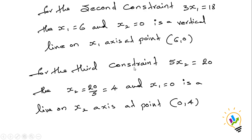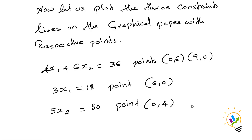For the third constraint 5X2 equal to 20, consider X1 as 0. X2 is going to become 20 divided by 5, which is equal to 4. So the point for this constraint is (0, 4). Now let us plot the three constraint lines on the graph paper with respect to these points.